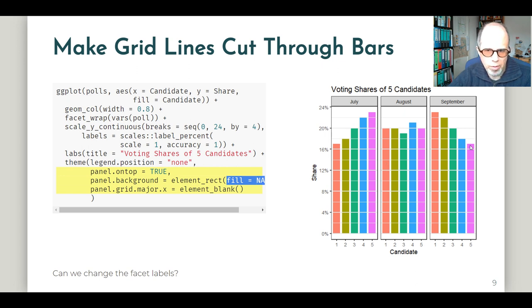And now I think we can also read the exact percentages in the panel on the right. For example, September candidate number five, the bar on the right of the plot is exactly between 16 and 18%. So it has to be 17% just like candidate one in July on the left of the plot. So now I think we have improved readability quite a bit.